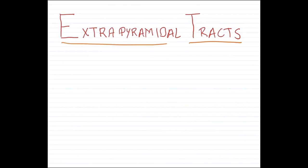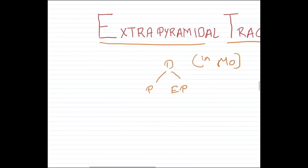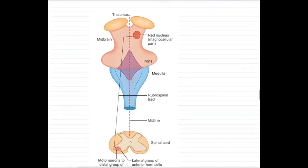How are descending tracts in general classified? They are classified either as pyramidal tracts or extrapyramidal tracts, and this classification is based on their location in the medulla oblongata. With this brief revision, let's start with the extrapyramidal tracts.